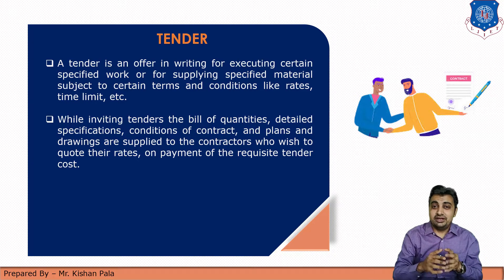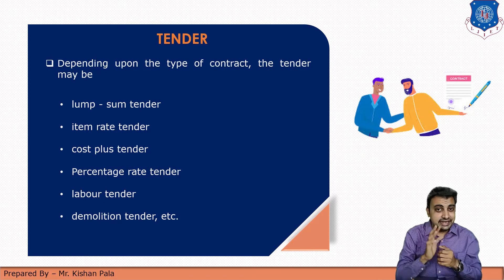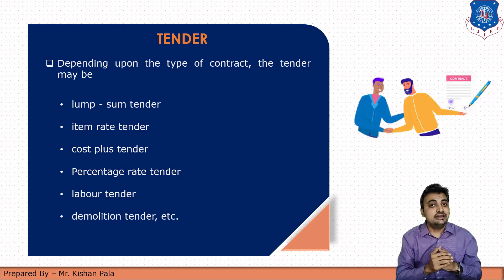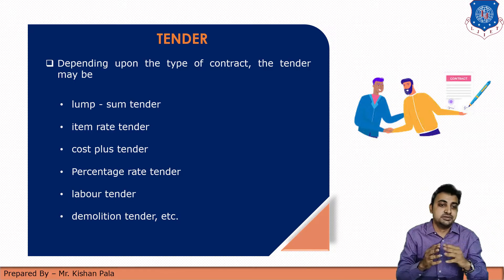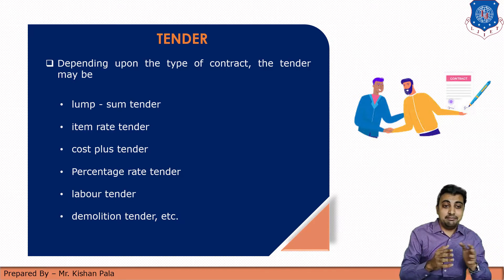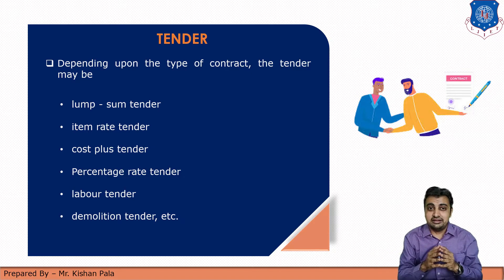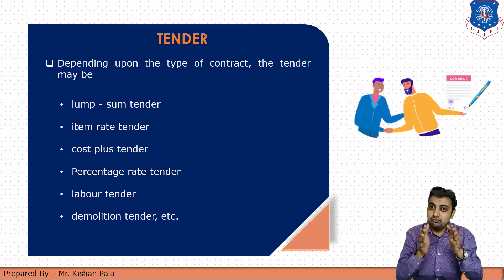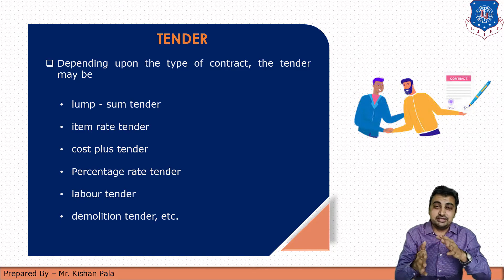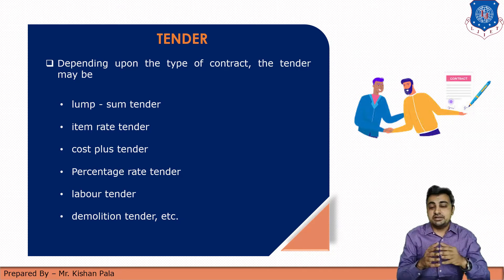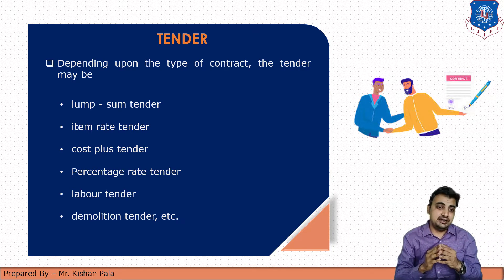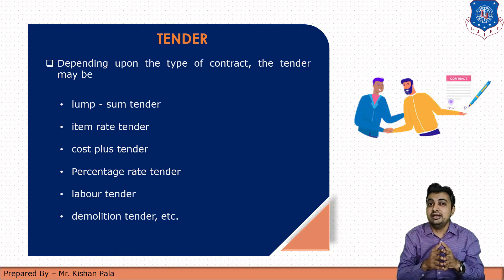If we talk about tender in detail, tender may vary depending upon the type of the work. We already discussed about the types of contract — for example, lump sum contract, item rate contract, cost plus contract, percentage rate contract, labor contract, or any other BOT contract. So depending on the work, the tender can also be done with respect to that contract type: lump sum tender, item rate tender, cost plus tender, percentage rate tender, labor tender, and demolition tender — it all depends upon the type of the work.